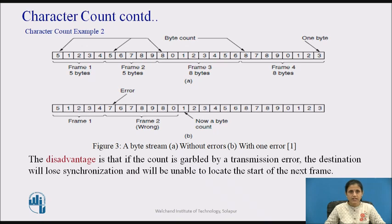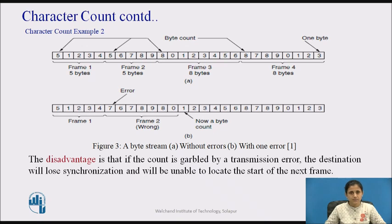Figure 3 shows another example of the character count technique with 4 small frames of sizes 5, 5, 5, 8, and 8 bytes respectively. Figure 3a is without any error. The trouble with this algorithm is that the count can be garbled by a transmission error. For example, if the byte count of 5 in the second frame of figure 3b becomes 7 due to a single bit flip, the destination will get out of synchronization and be unable to locate the correct start of the next frame. Even if the checksum is incorrect, the destination has no way of telling where the next frame starts, and requesting retransmission does not help. For this reason, the character count method is rarely used.